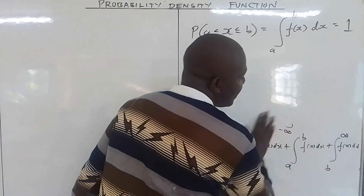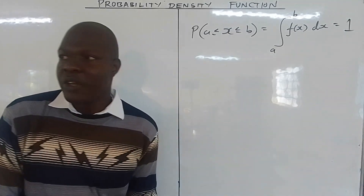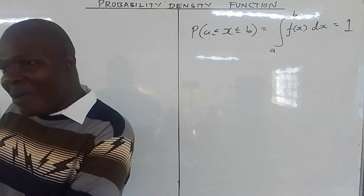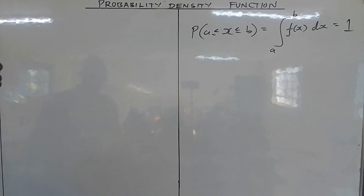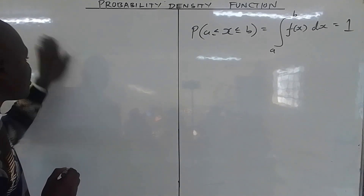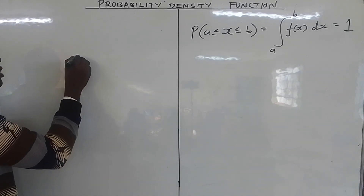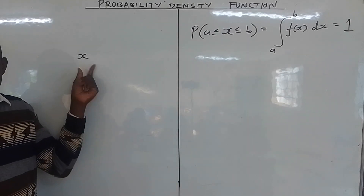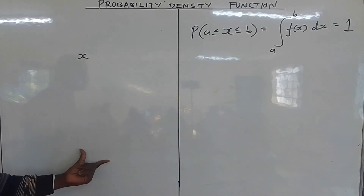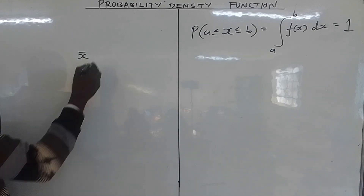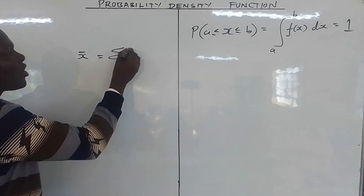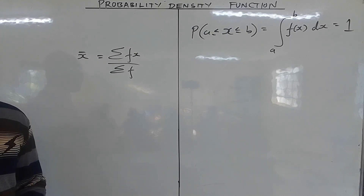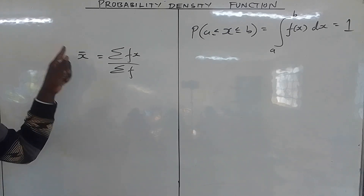Just like when you deal with discrete random variables — statistics uses summation — when you come to probability you are mostly dealing with continuous random variables. So if you are looking for the mean, the mean is the expectation. For a discrete random variable x denoting data, the mean is given by summation of f(x) over summation of f, where f is the frequency of each value in the sample.